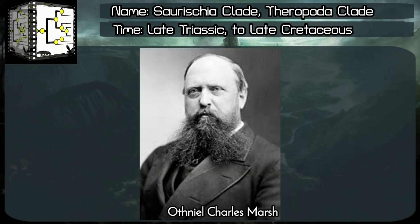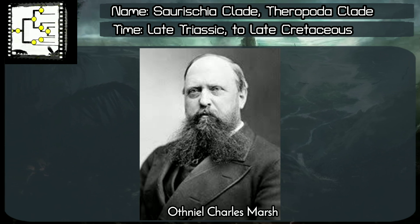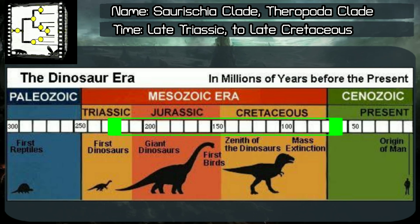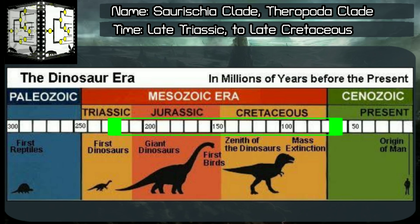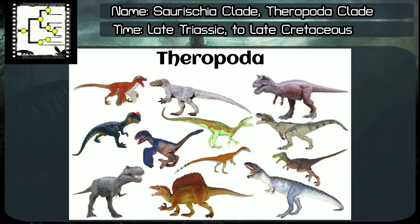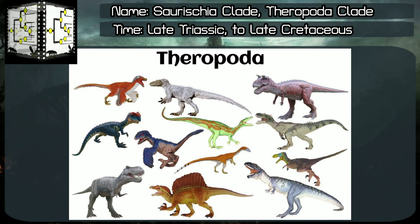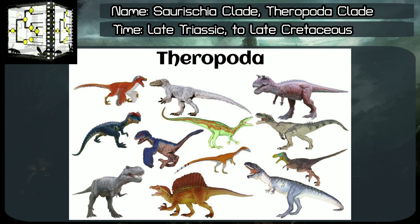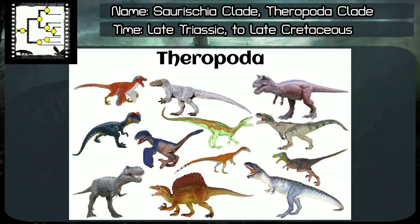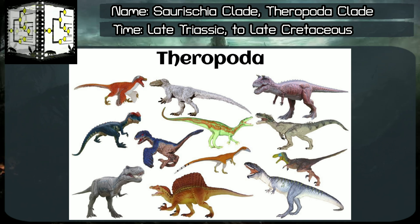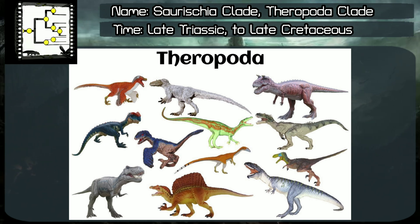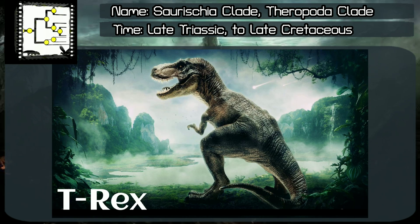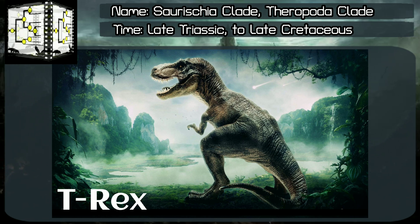Theropoda clade, classified by Othniel Charles Marsh, year 1881. Time range: Phanerozoic Aeon, Mesozoic Era, late Triassic to late Cretaceous periods, something around 232 to 66 million years ago. From Greek, Theropoda means wild beast foot. The birds emerged from small, specialized Coelurosauria theropods and are today represented by about 10,500 living species. Theropods were large carnivores equipped with piercing teeth, a very strong bite, massive body, and great smell and vision senses. The theropod group includes the famous Tyrannosaurus rex and many other expert predators.